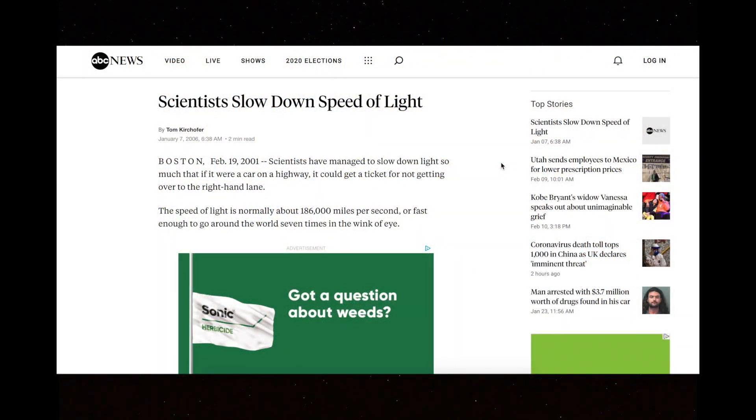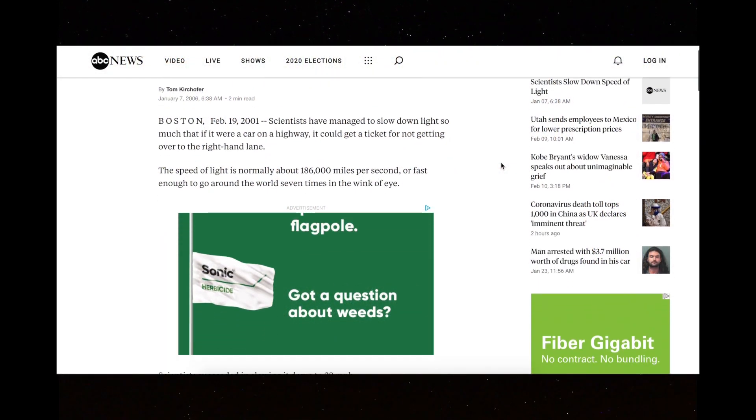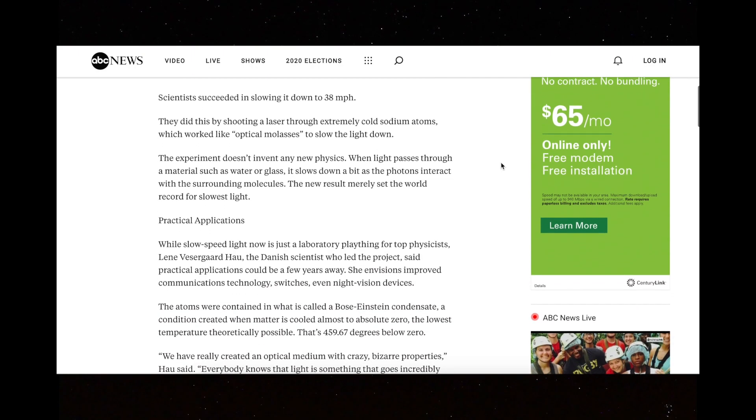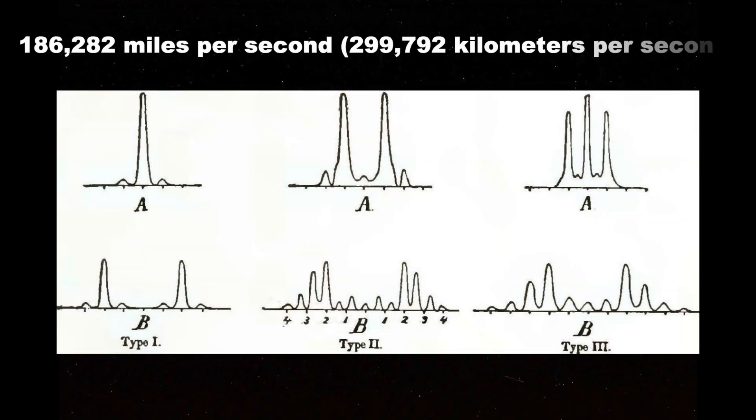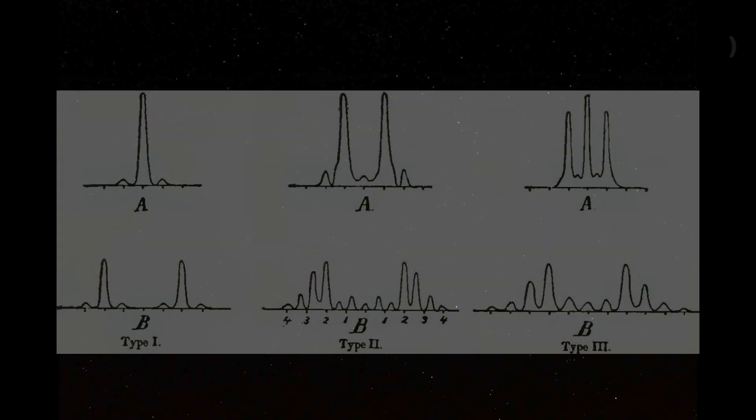In 2001, a team of researchers exploited the fact that light will slow down as it passes through a material such as water or glass. Using extremely cold sodium atoms, they were able to slow the light down to just 38 miles per hour. That's pretty cool. But as far as we know, it's still impossible to exceed the speed of light in a vacuum. This causes some really weird stuff to happen as you approach that universal speed limit.